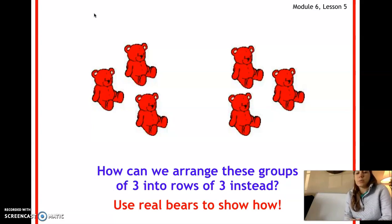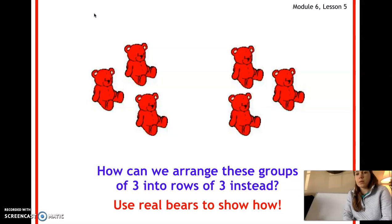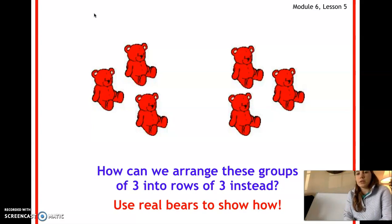Now I want you to arrange these groups of three into rows of three instead. A row goes this way, from side to side — make sure they're in a straight line across. Each row needs to have three bears in it. You're going to need six of your objects. I want you to pause this video and try that at home. When you're ready you can play this video again and I will show you my answer.